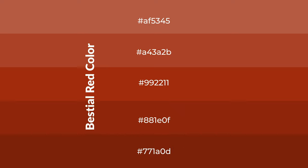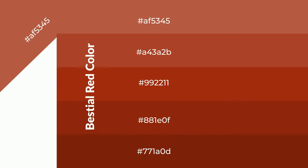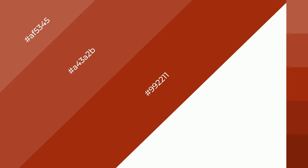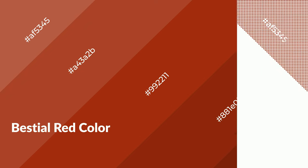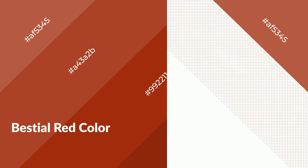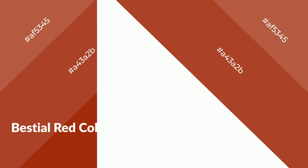To generate shades of a color, we add black to the color. Shades are used in patterns, 3D effects, and layers, creating depth and drama. Bestial red is a warm color and it emits cozier and active emotions.